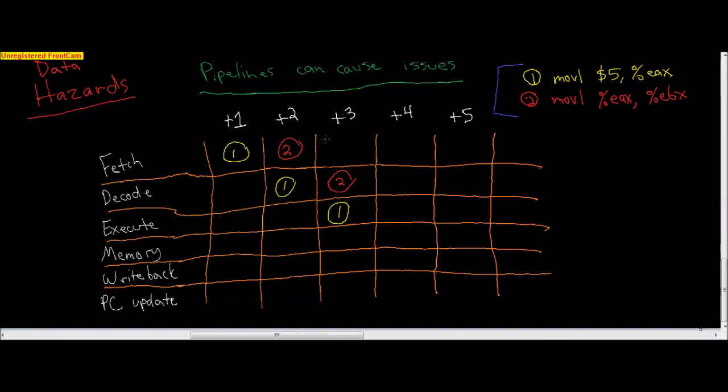This creates a data hazard. That is not okay. Because if we look at what's going on here, we're moving a five into EAX. The second instruction then moves EAX into EBX. In this decode stage, this thing needs to read EAX. This is an issue because this instruction hasn't reached the write back stage yet. Write back writes to registers. This is when the five actually gets moved into EAX. When we're trying to read EAX here, the five isn't in there yet because it happens here.